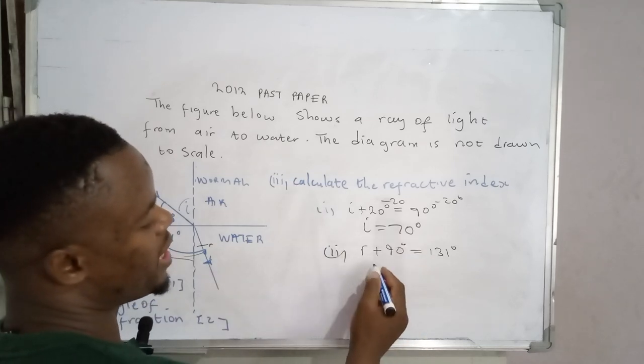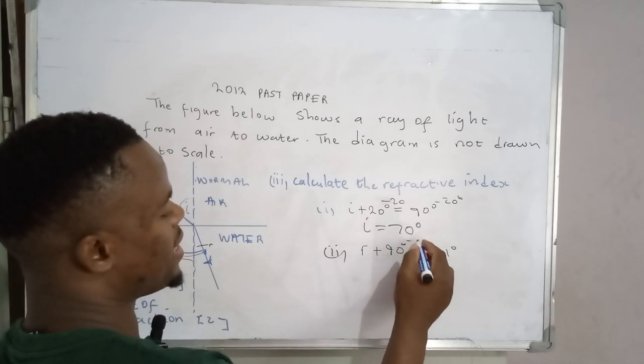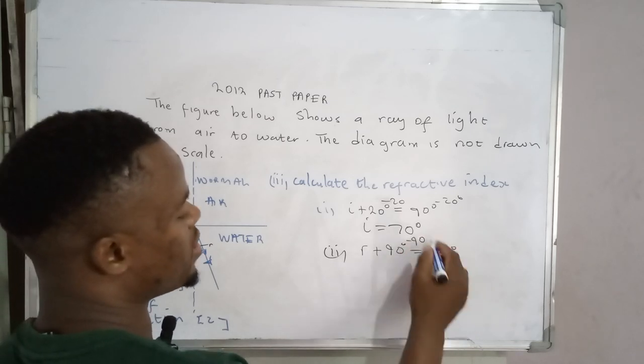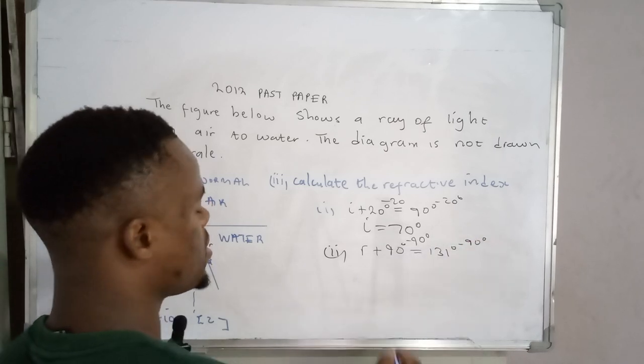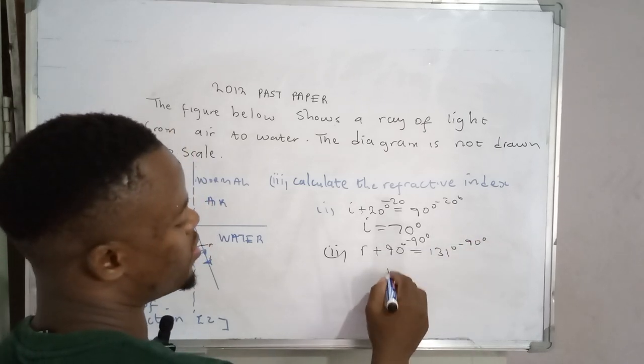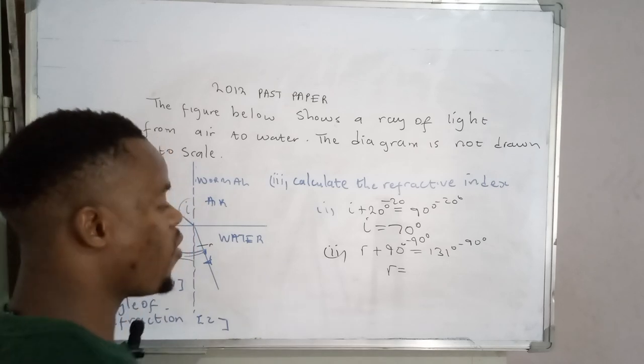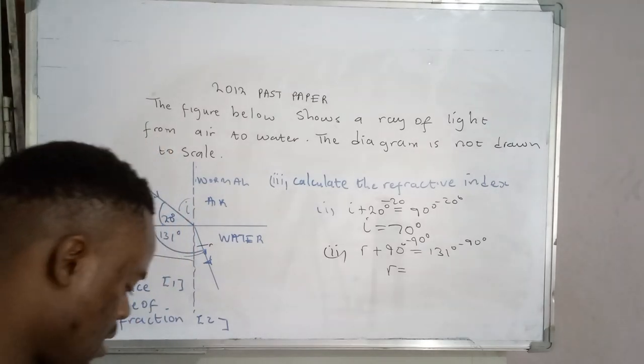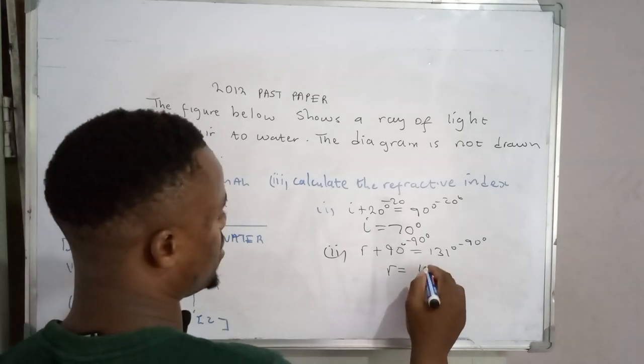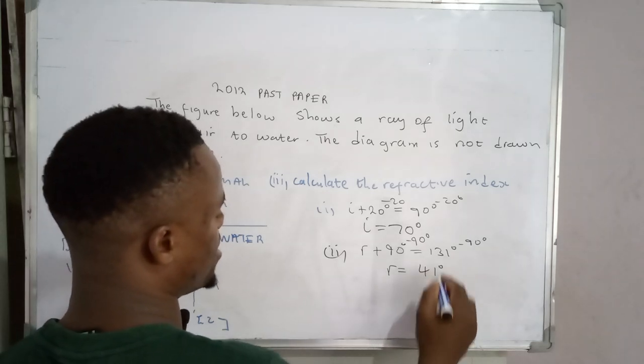We add the additive inverse of 90 on both sides of the equation. So now these two will cancel, and we have the angle of refraction which will equal 41 degrees. So we have resolved that.